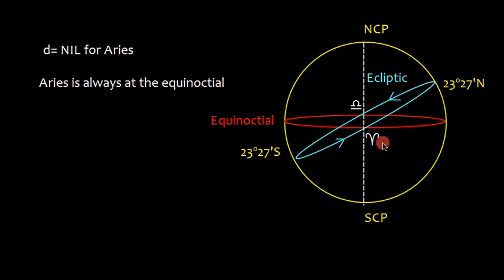Let's talk about Aries. Aries, the first point of Aries, is the intersection of equinoctial and ecliptic. Aries is always at the equinoctial. So there is no declination. That's why there is no declination given for the Aries.